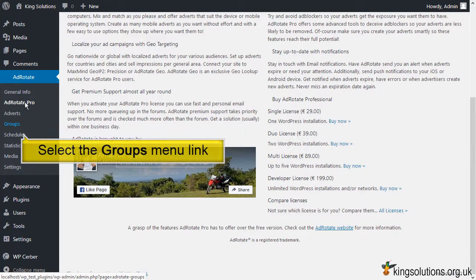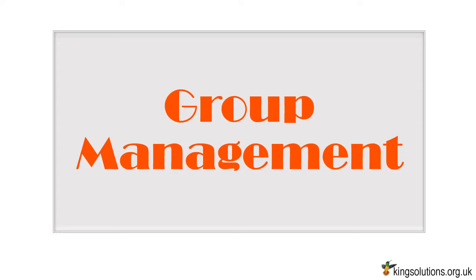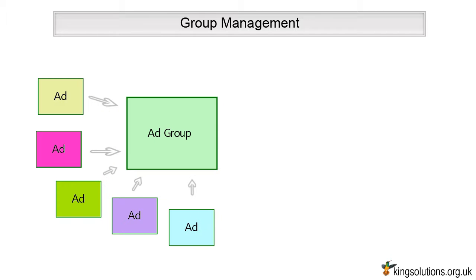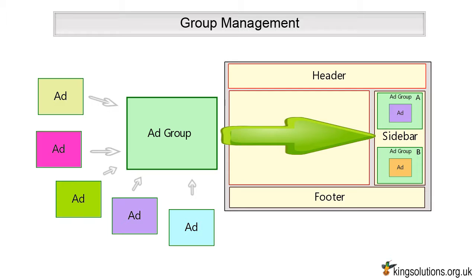After dismissing the AdRotate banner, select the AdRotate link in the dashboard menu to reach the general info page. When you're ready, click on the Groups link to go to the group management page. I like to think of an ad group as a placeholder for a group or set of related ads. The ad group will be located on your WordPress page, in the sidebar for example, and each of the ads within it will be displayed in rotation.